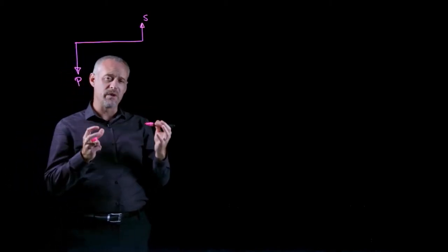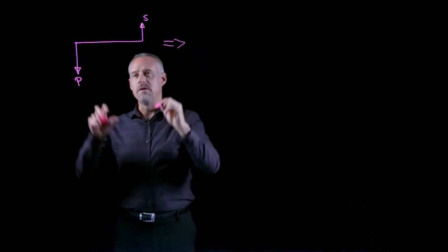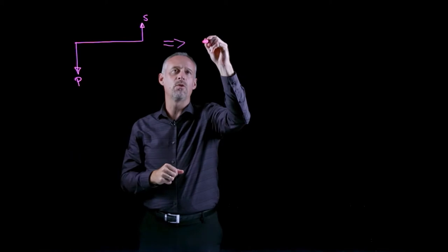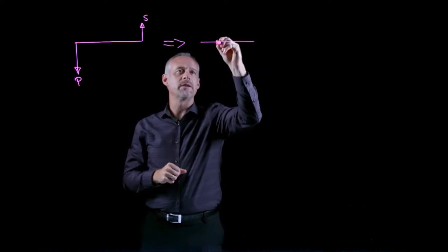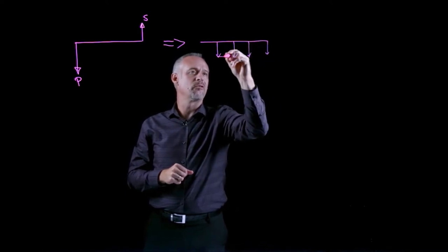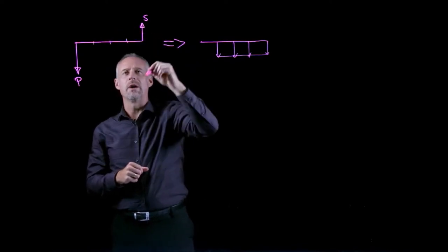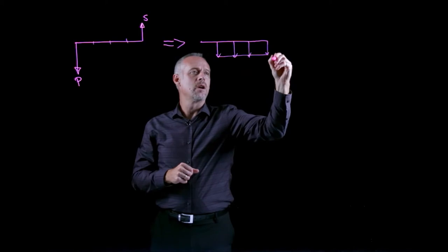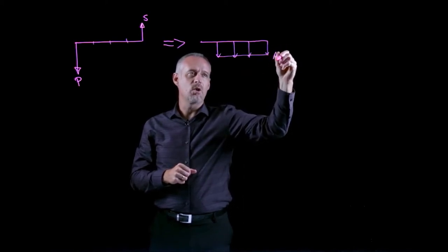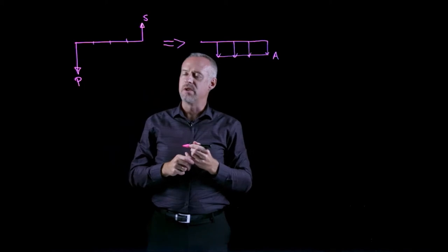And the whole point behind equivalent annual cost is that I would like to convert these cash flows, this investment and this return, into an equivalent cash flow. I'll draw it with four time periods. What I'm looking for is the value of a that is equivalent to this value of p and this value of s.